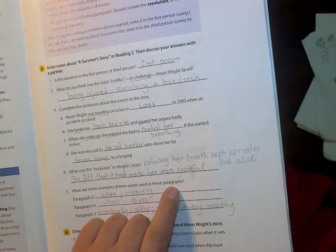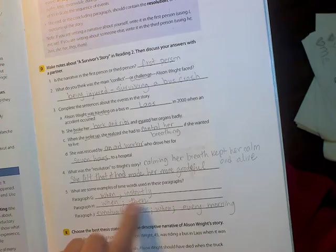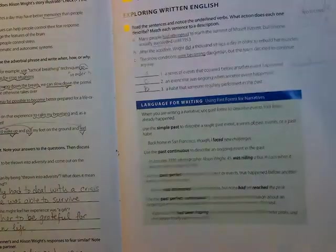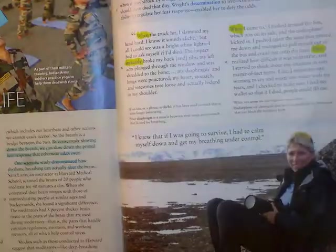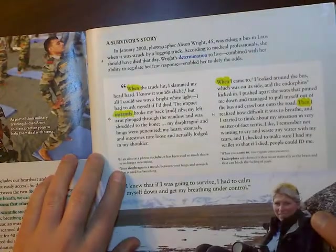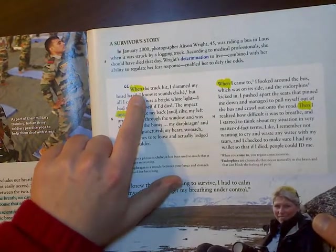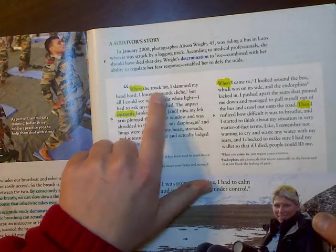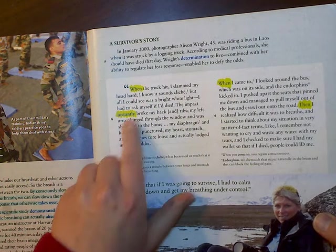What are some examples of time words in these paragraphs? You're going to want to use some time words in your essay. So let's take a look. Here it says paragraph G. So in paragraph G, I'm going to flip back a few pages here. Can we see G? There it is.